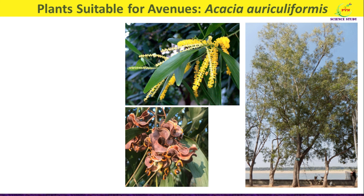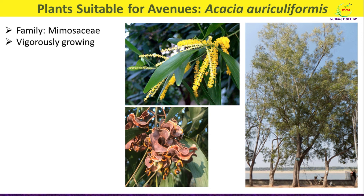Next is Acacia auriculiformis, belonging to family Mimosaceae. It is a very common roadside tree in Maharashtra. It is a vigorously growing medium-sized tree that can grow in all types of soil, including poor soil. The plant shows compound leaves which fall at an early stage, and the leaf petiole gets modified to give a leaf-like appearance called a phyllode. The flowers are yellow and profusely produced in a spike type of inflorescence. Acacia is popular for shading factory, college, school grounds, parks, and playgrounds, making it suitable for avenues.